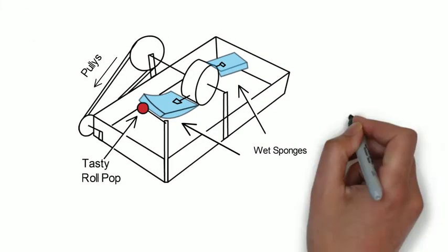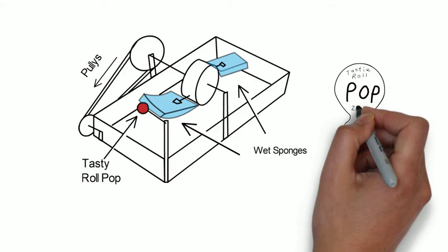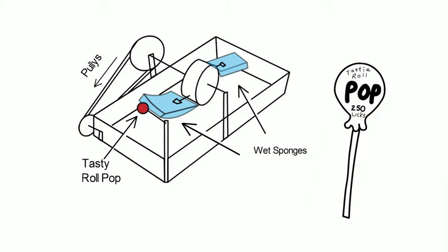Which is why you could put a sticker on the outside of a Tootsie Roll Pop saying approximately 250 licks to get to the center.